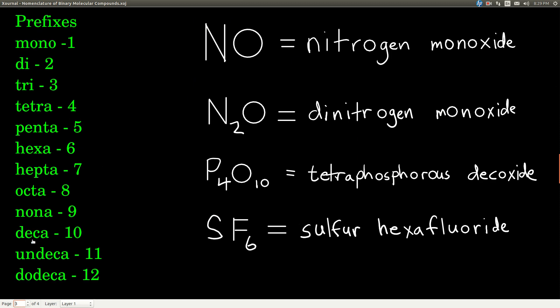So these are the prefixes. Memorize these. Mono means 1, di means 2, tri means 3, tetra 4, penta 5, hexa 6, hepta 7, octa 8, nona 9, deca 10, undeca 11, dodeca 12.